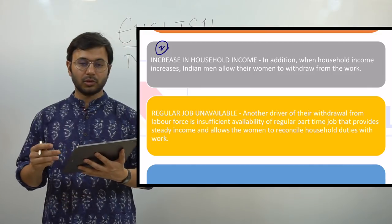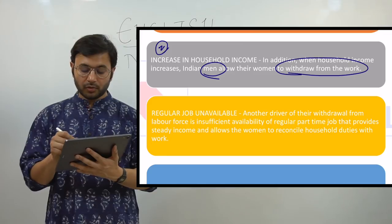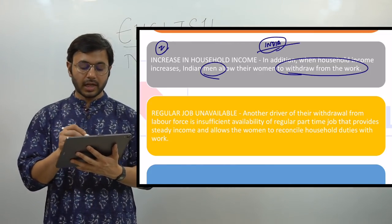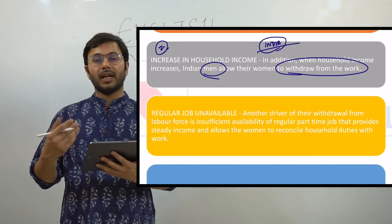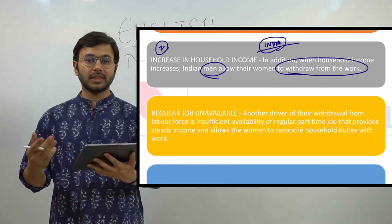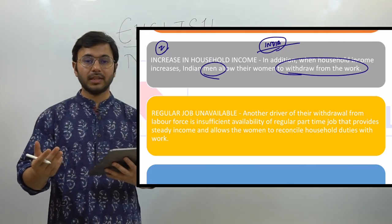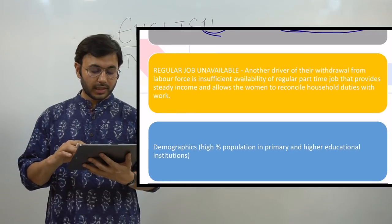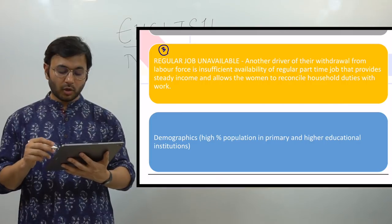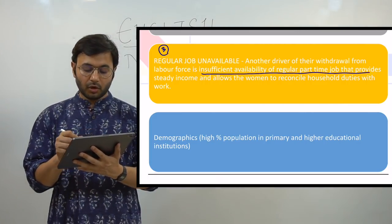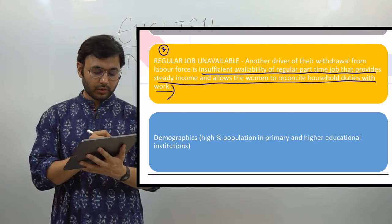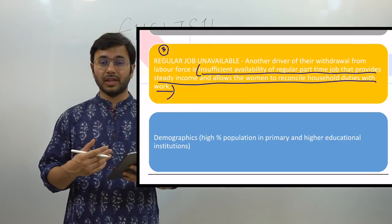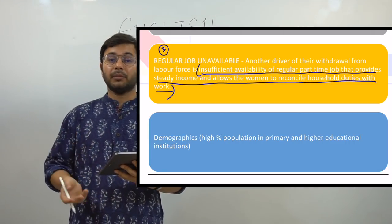Number two is increase in household income. When household income goes up, men allow women to withdraw from work — this happens in India, and statistics show that families moving into the middle or higher income group tend to withdraw women from work. Another driver of withdrawal from the labor force is insufficient availability of regular part-time jobs that provide steady income and allow women to reconcile household duties with work, so people are not becoming part of LFPR.